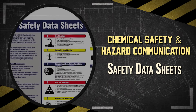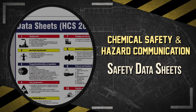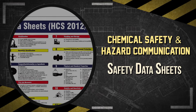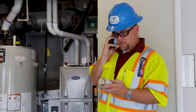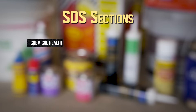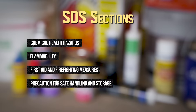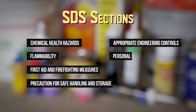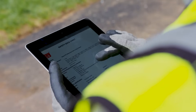SDS stands for Safety Data Sheet. Safety data sheets serve as the source of detailed information on a particular hazardous chemical. It's required that all product manufacturers and distributors provide safety data sheets to its users. If you didn't receive an SDS from your supplier, you should request one or visit their website to download it. SDSs have a uniform format and are divided into 16 sections, containing important information such as the chemical's health hazards and flammability, first aid and firefighting measures, precautions for safe handling and storage, appropriate engineering controls, personal protective equipment or PPE needed, and emergency procedures for spills.